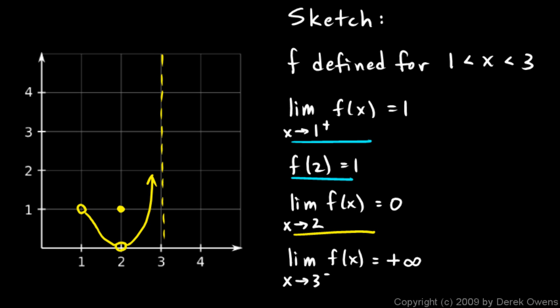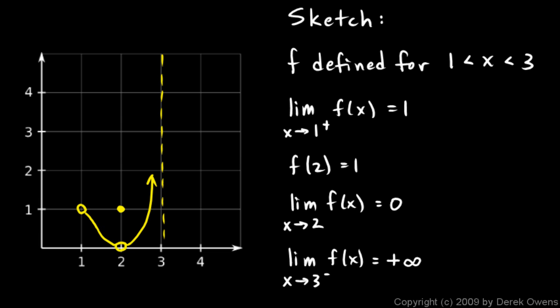That graph satisfies all four of the given characteristics. That's not the only possible answer — each segment could wind around as long as it converges on the value of 1 near x equals 1, approaches 0 near x equals 2, and zooms up toward positive infinity as x approaches 3. So the curves don't have to look exactly like these, but what I drew is one valid answer that satisfies all the conditions.